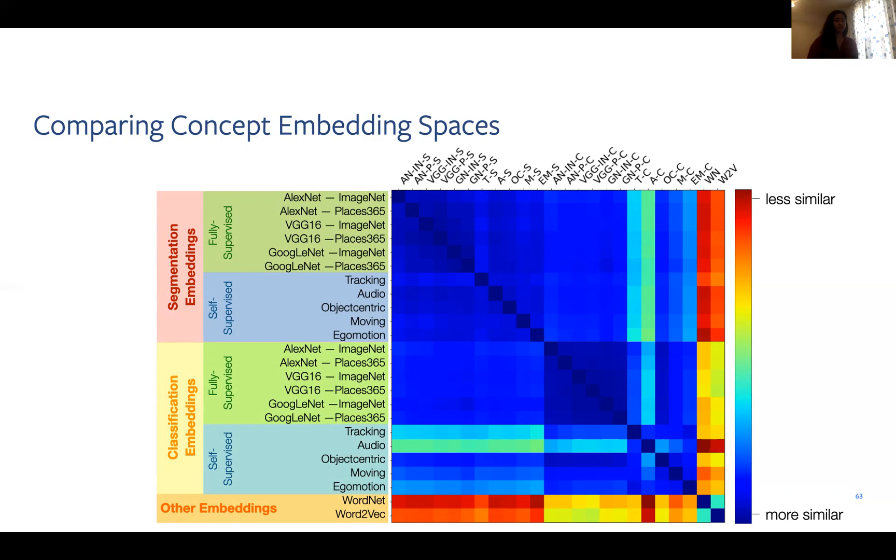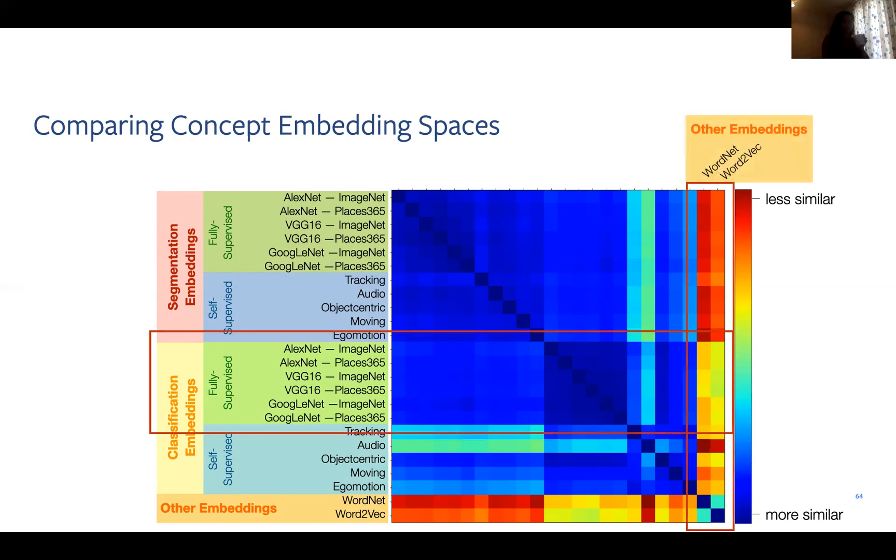We can also use our method to compare different representations in concept space, including non-neural network representations. We're able to do this by taking all the concept vectors and then computing similarity scores between them. And then we're able to construct a similarity matrix for every model. Then we're able to compute similarities between those similarity matrices to understand how similar or different kinds of models are encoding concepts. This allows us to move beyond the realm of comparing deep learning models to other models such as WordNet and even theoretically the mammalian brain.